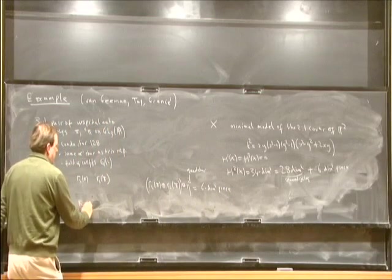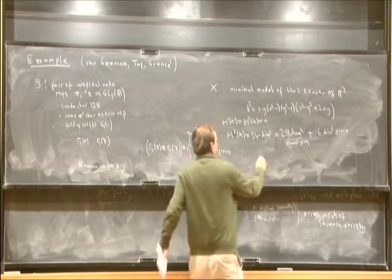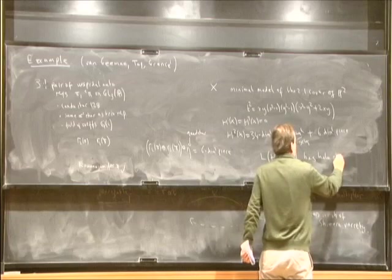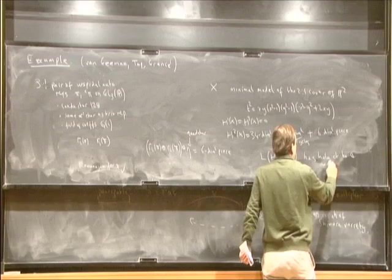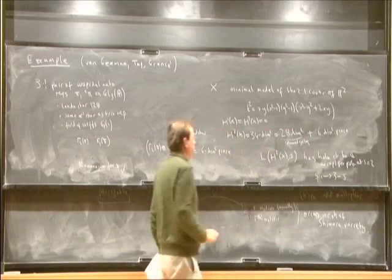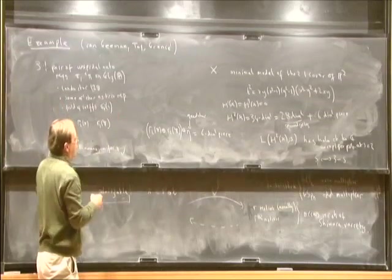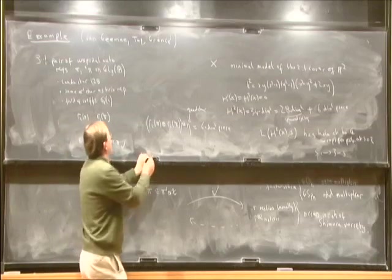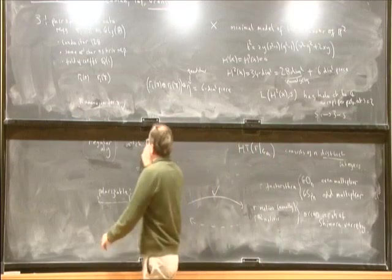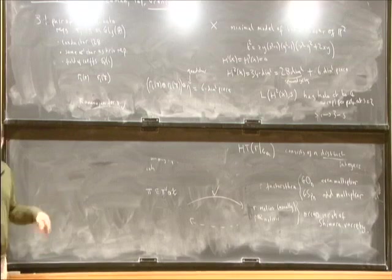That then proves Ramanujan for pi. It also proves that the L-function has a holomorphic continuation to the whole complex plane except for a pole at s=2, and a functional equation relating s to 3-s. There are more examples known numerically. This is the only example where someone — in this case Grenier — has actually applied the Faltings-Serre method, but one could presumably produce a whole series of further examples.